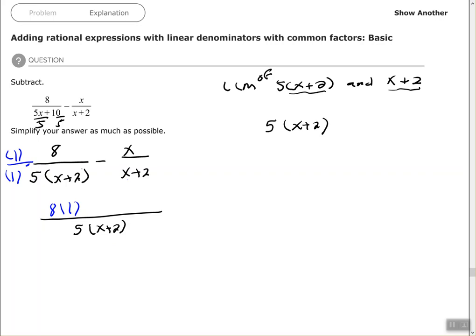However, my second denominator only has x plus 2, but my common denominator is 5 times x plus 2. That tells me I multiply by 5, so minus x times 5.